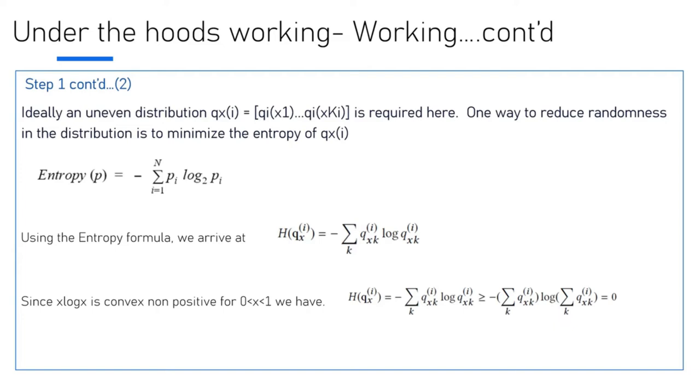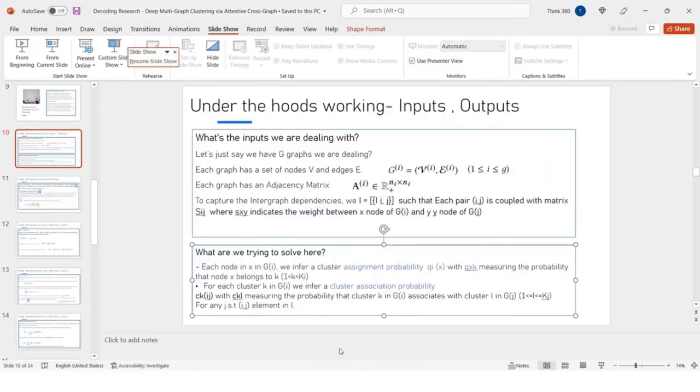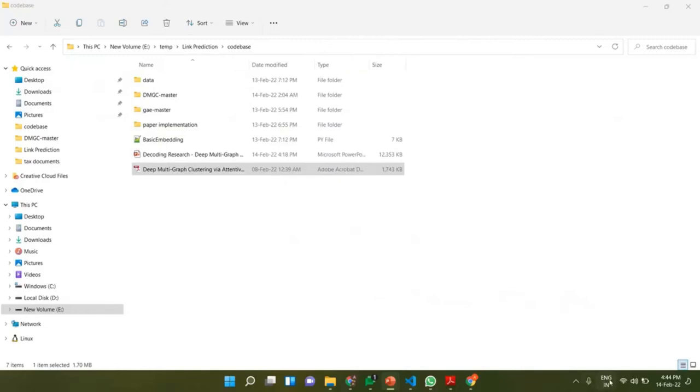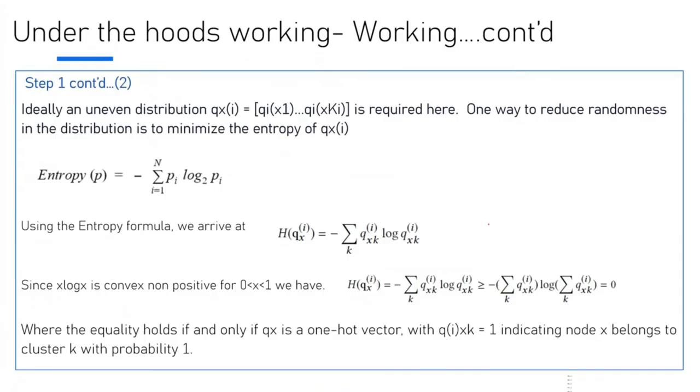To minimize the entropy on Q_X(Y), if we look at the entropy formula: summation from I=1 to N of P_I log P_I. We use the same formula for determining the entropy for Q_X(Y). Having worked out the entropy formula, if you take a good look at it, it's in the form of X log X, which is convex and non-positive for X greater than 0 and less than 1. We have an equation given here in the form of Q_X.